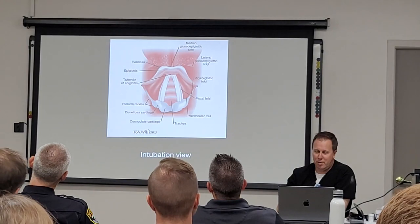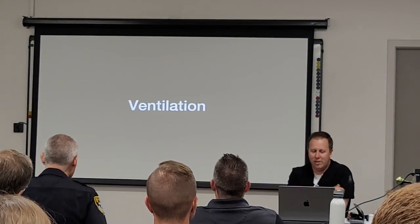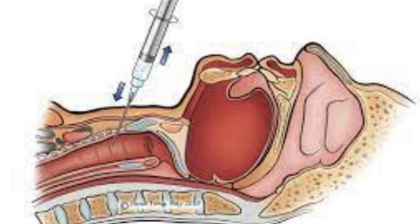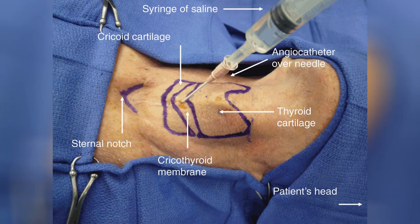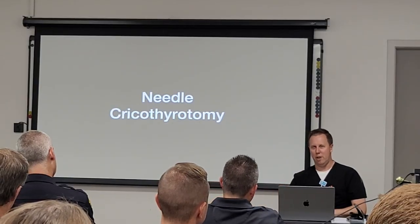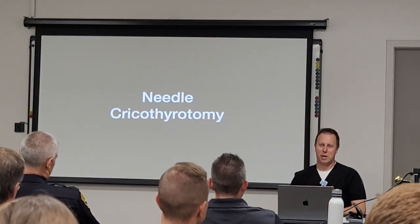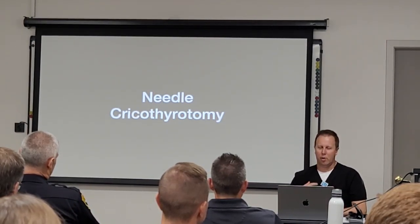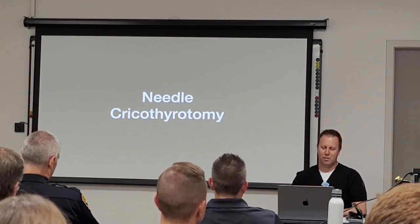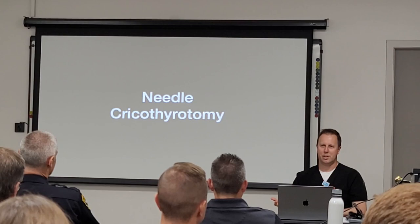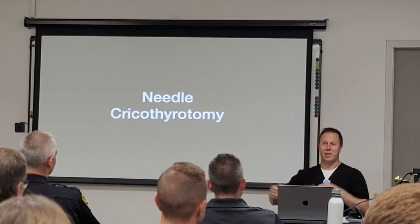For ventilation during a needle crike: when doing the needle crike you can oxygenate the person, but with a 14-gauge needle you cannot ventilate them. That's a common misinterpretation — you can oxygenate but you're not going to ventilate them. It will buy time, but not unlimited time. There are a handful of different ways to oxygenate once you have the needle crike set up; a BVM would not be my first choice — jet ventilation is the thing that should come to mind.